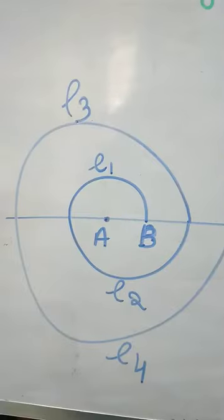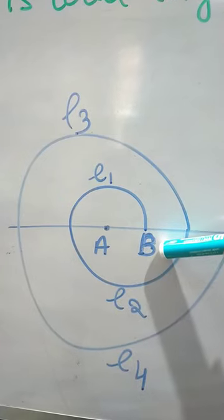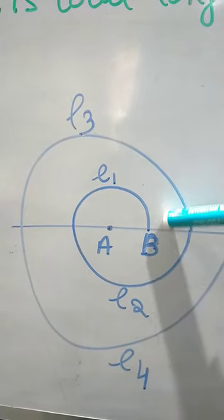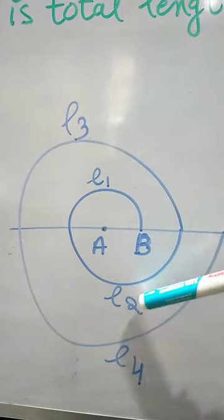A is the center of first semicircle, B is the center of second semicircle and so on. L1 is the length of first spiral, L2 is second spiral.